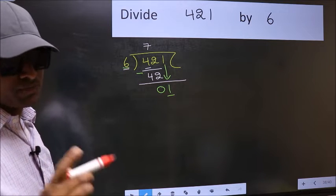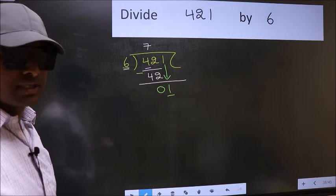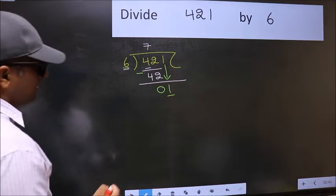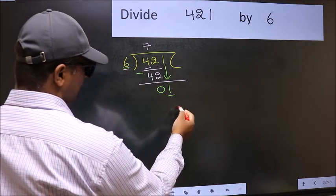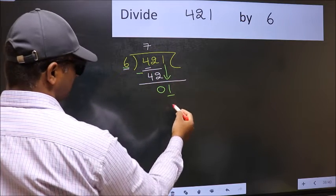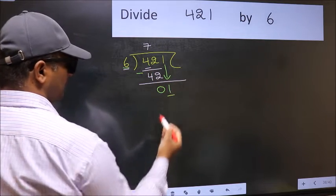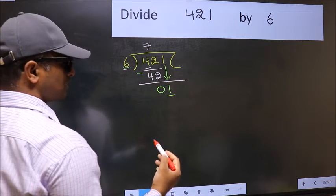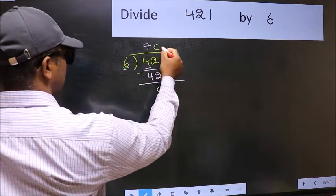Instead, what you should think of doing is: what number should we write here? If I take 1, we will get 6, but 6 is larger than 1. So what we should do is we should take 0.